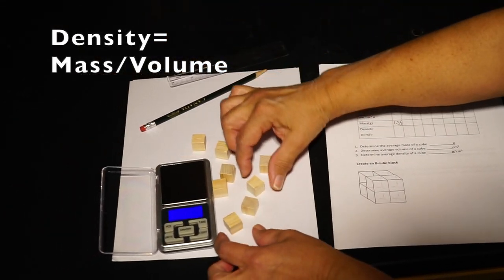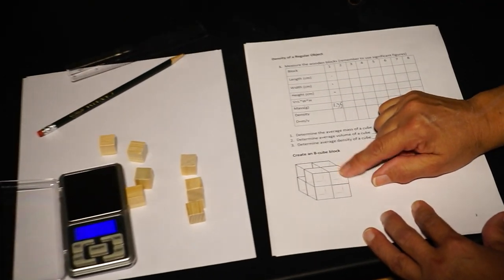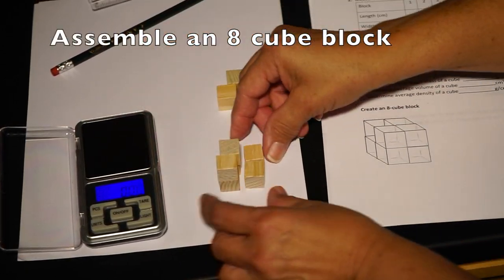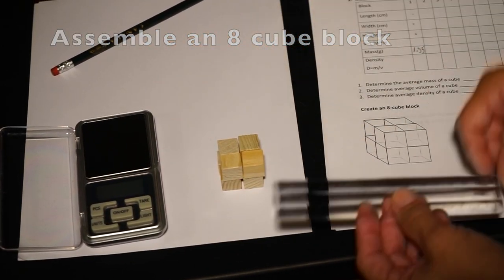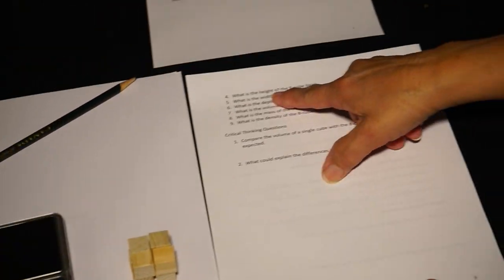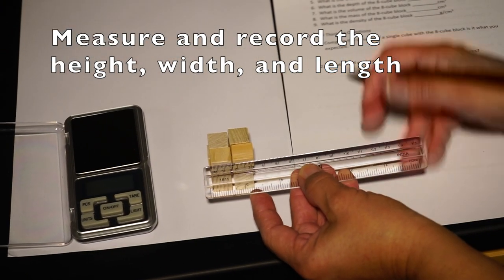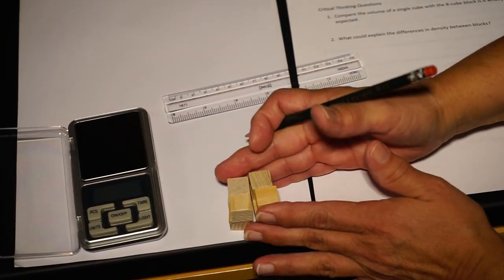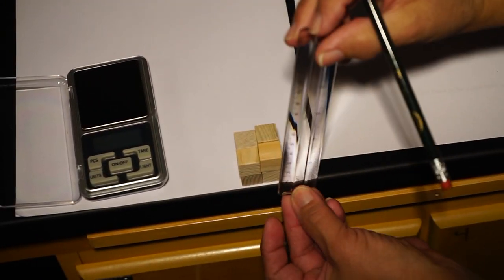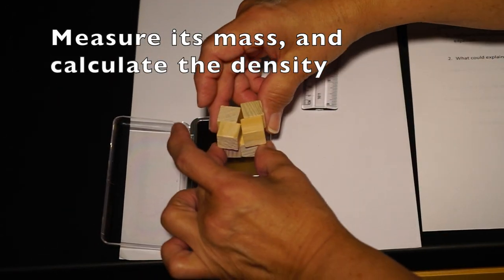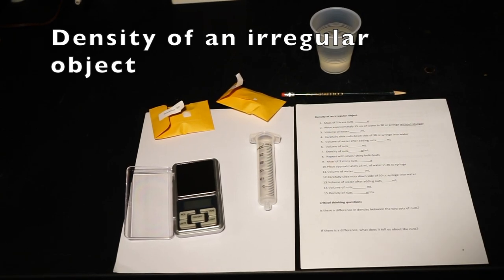Then calculate the density. To do this, divide the mass of the block by the volume. Again, do this for all eight blocks. Next, assemble all the blocks into a single block. Measure the height, width, and length of this eight-cube block. Determine the mass of the block by placing it on the balance, then calculate its density.